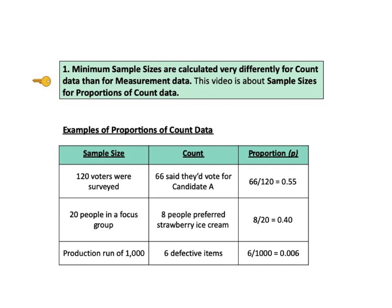OK, now let's take a closer look at each key to understanding. KTU number 1 says minimum sample sizes are calculated very differently for count data and measurement data. This video is about sample sizes for proportions of count data.